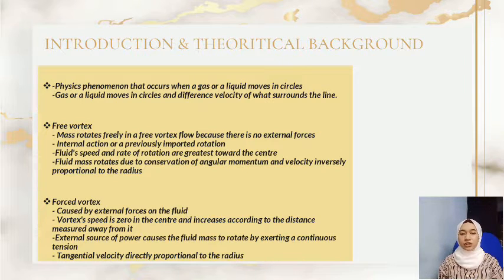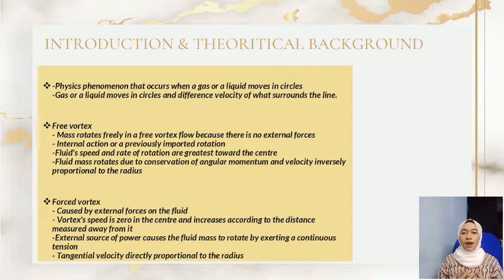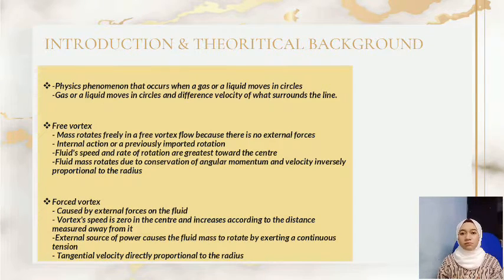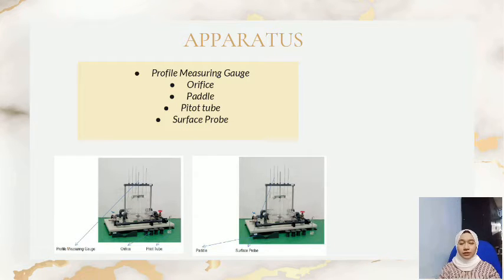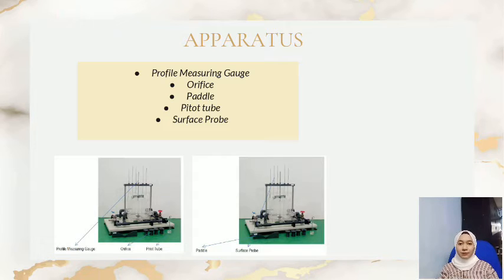Engineers and designers are able to characterize forced and free vortices that generate in machinery. The apparatus for these experiments are: profile measuring gauge, orifice, pedal, pitot tube, and surface probe.